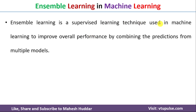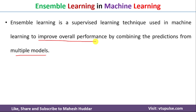Ensemble learning is a supervised machine learning technique to improve the overall performance by combining the predictions from multiple models. In traditional machine learning, we consider a single model to solve a given problem definition. It may happen that a given model may or may not perform better on that problem. In ensemble learning, we consider multiple models, get predictions from all of them, and combine those predictions to get improved overall performance.